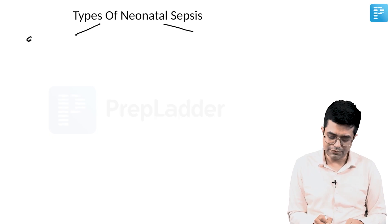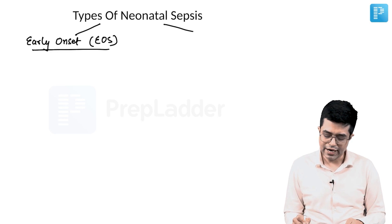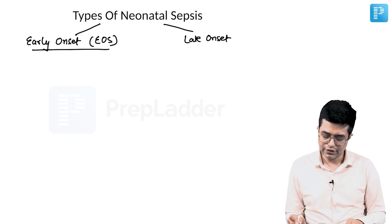Two categories of neonatal sepsis have been defined: early onset neonatal sepsis, written as EOS, and late onset neonatal sepsis, called LOS.